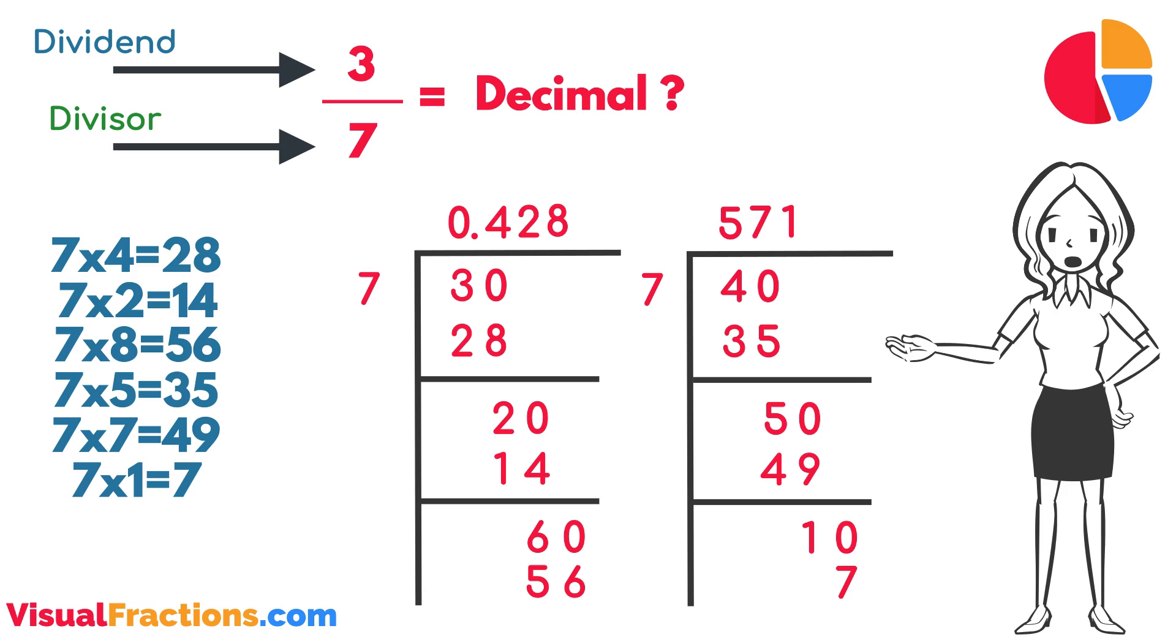In the case of three-sevenths, the sequence 428571 repeats indefinitely. However, for many practical purposes, stopping at this point gives us a sufficiently accurate representation of the fraction in decimal form.